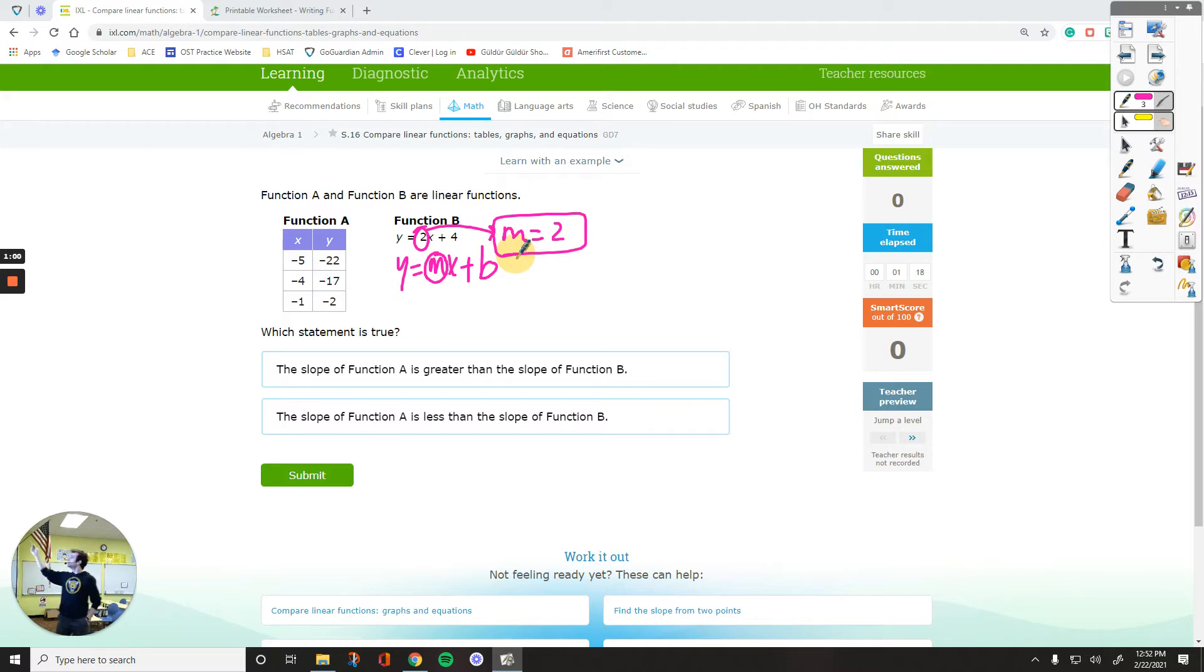For function a, the slope is rise over run. If you have something visual, if you have the line in front of you on the coordinate plane, it is rise over run. But to get that rise over run, we have another formula as well.